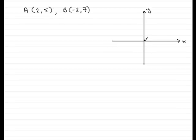2, 5, where would that be? Let's say 2 across, 5 up. Let's pretend that it's there. That's the point A with coordinates 2, 5.